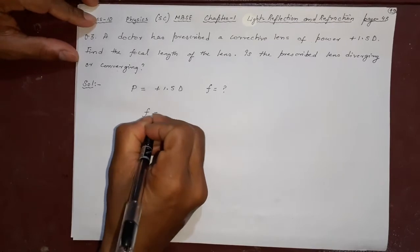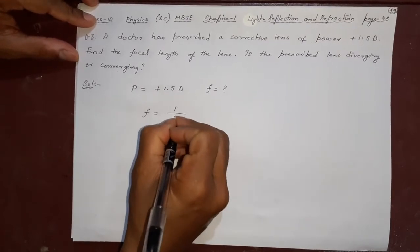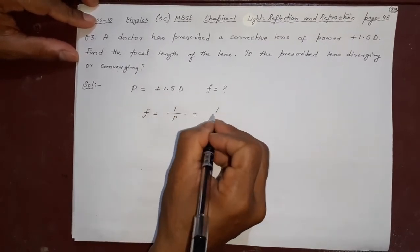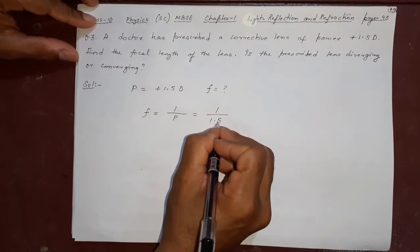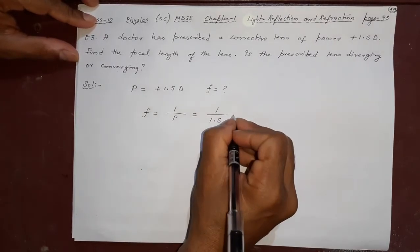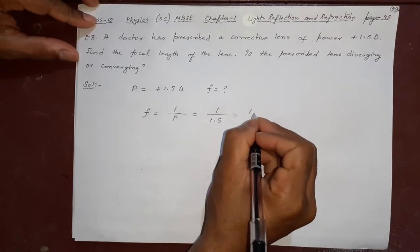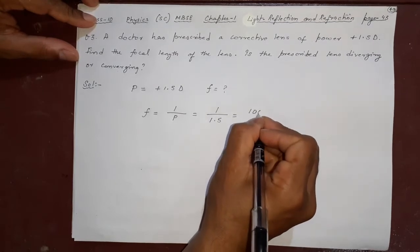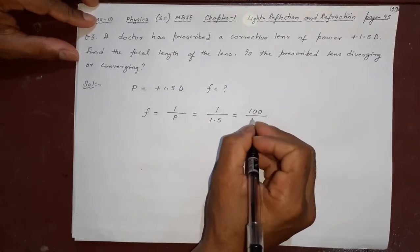F equals 1 by P equals 1 by 1.5. If I divide this, what will I get? Suppose I multiply 100 on both sides, both numerator and denominator.